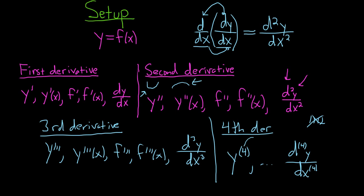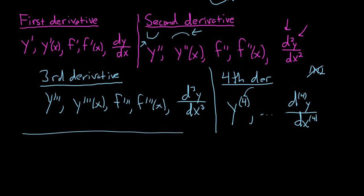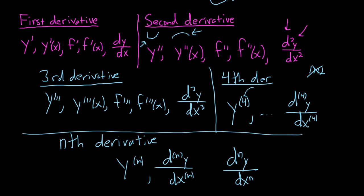So the nth derivative would be the same, except it would have an n there. So for example, the nth derivative, this would be the same, so you would just have an n here. Or you would have an n here and an n here in Leibniz. Or simply, if you prefer, just this. You don't have to have the parentheses. This is okay as well.